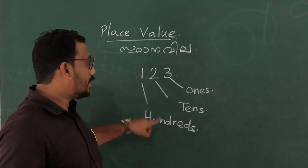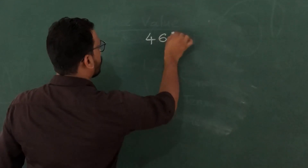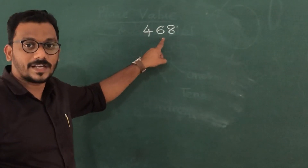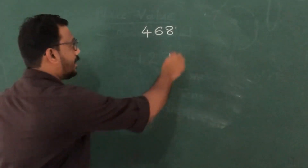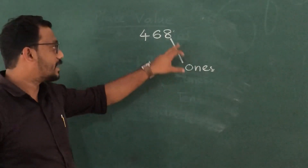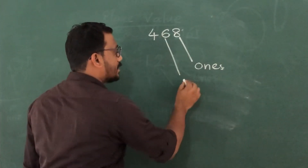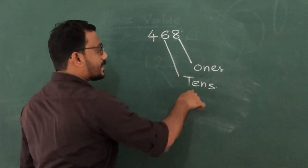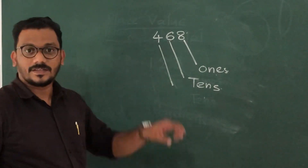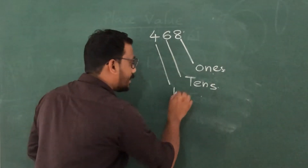Now let us take another example. This is another number — four hundred sixty-eight. Here the eight comes in the place value of ones — eight ones. Here the six comes in the place value of tens — six tens. And the place value of four is hundreds.